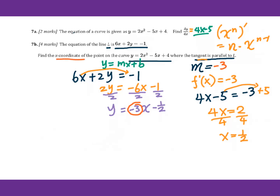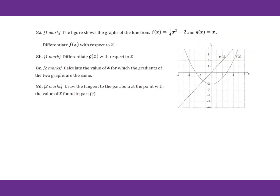For 8a, the figure shows the graph of the function f of x equals 1 over 4x squared minus 2, and g of x equals x.